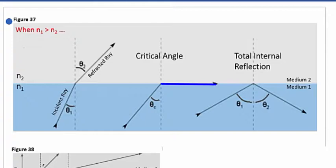And at this point, the incident angle is known as the critical angle. Now, if we increase the incidence angle past the point of the critical angle here, then we're going to have what is known as total internal reflection.